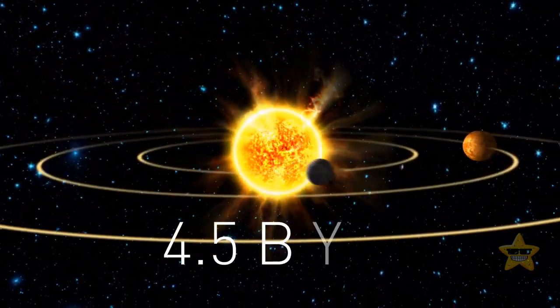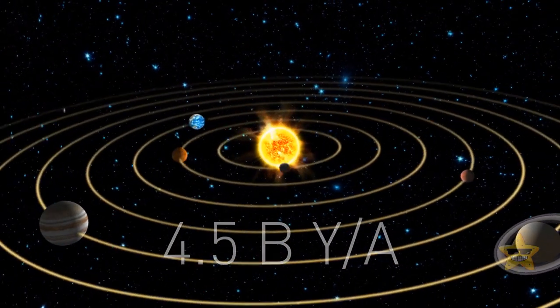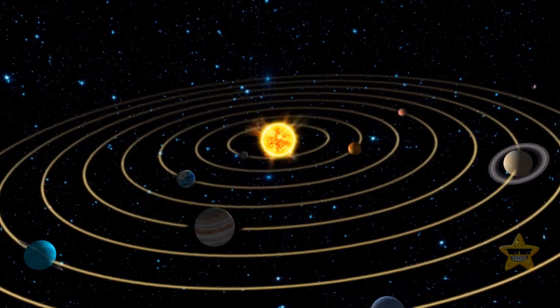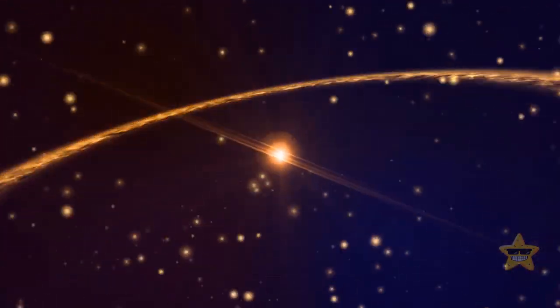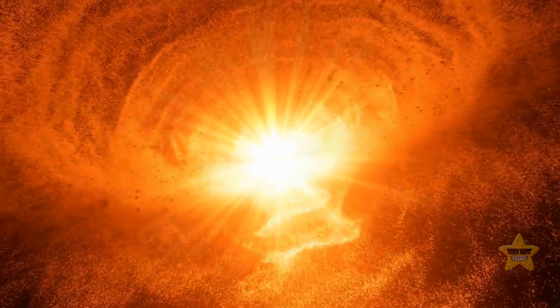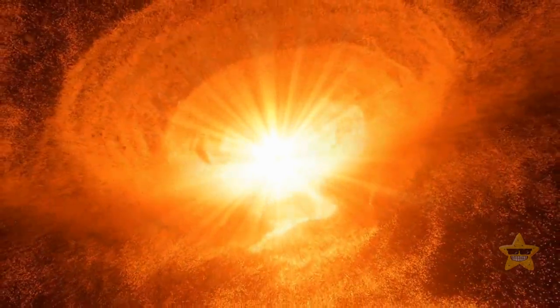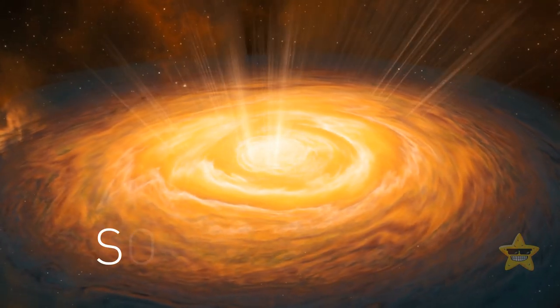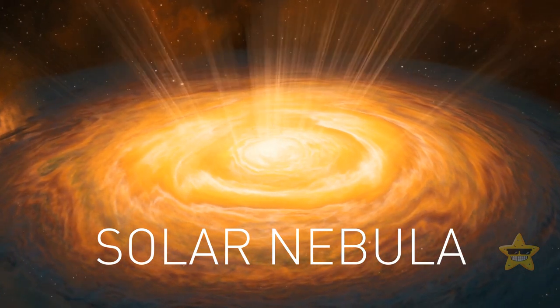It formed around 4.5 billion years ago, after a big cloud of space gas and dust collapsed because a nearby star exploded. When this cloud collapsed, it formed a spinning disk of material called a solar nebula.